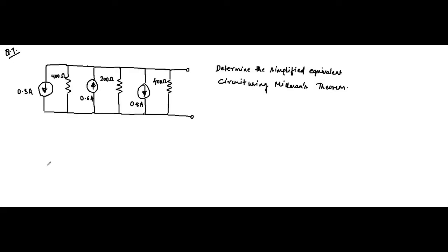This is the seventh question on Millman's theorem. Here we have parallel current sources along with resistors, and we have to determine the Millman equivalent circuit across the two terminals — which means we need to find the Norton equivalent circuit. For parallel voltage sources we determine the Thevenin equivalent circuit, but for a current source arrangement we determine the Norton equivalent circuit. Note that I have not assigned the current direction yet because we have current sources of different directions.